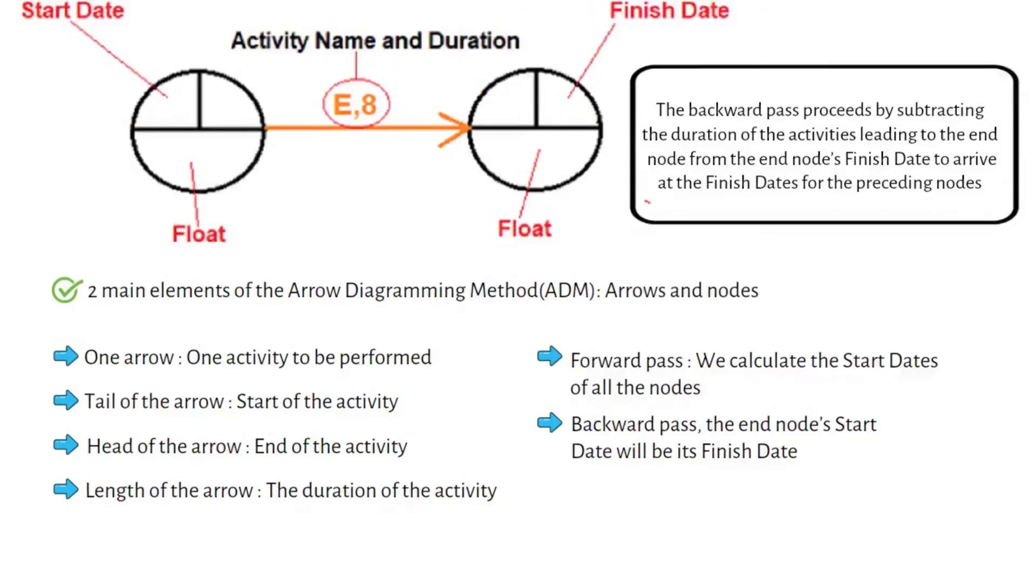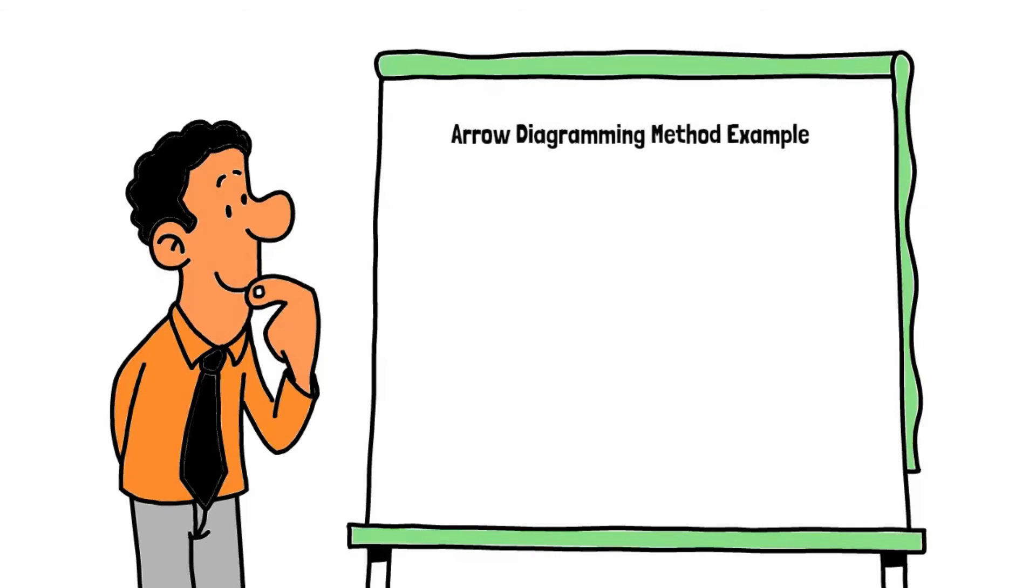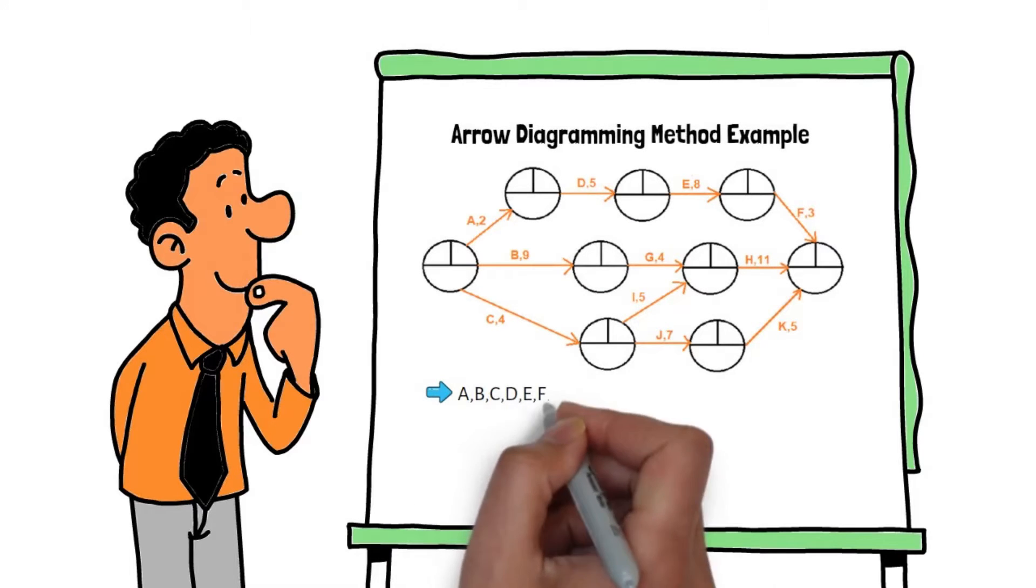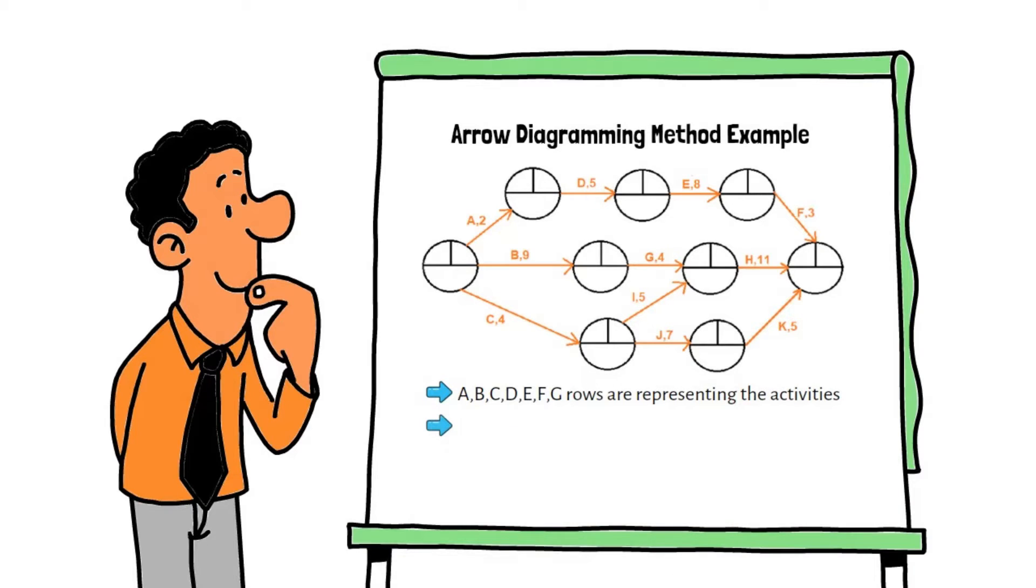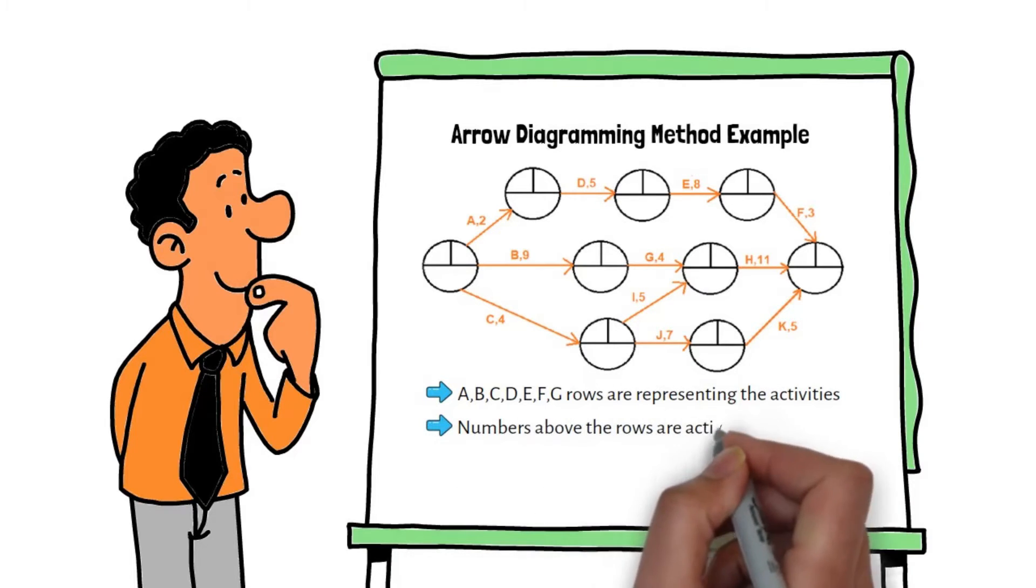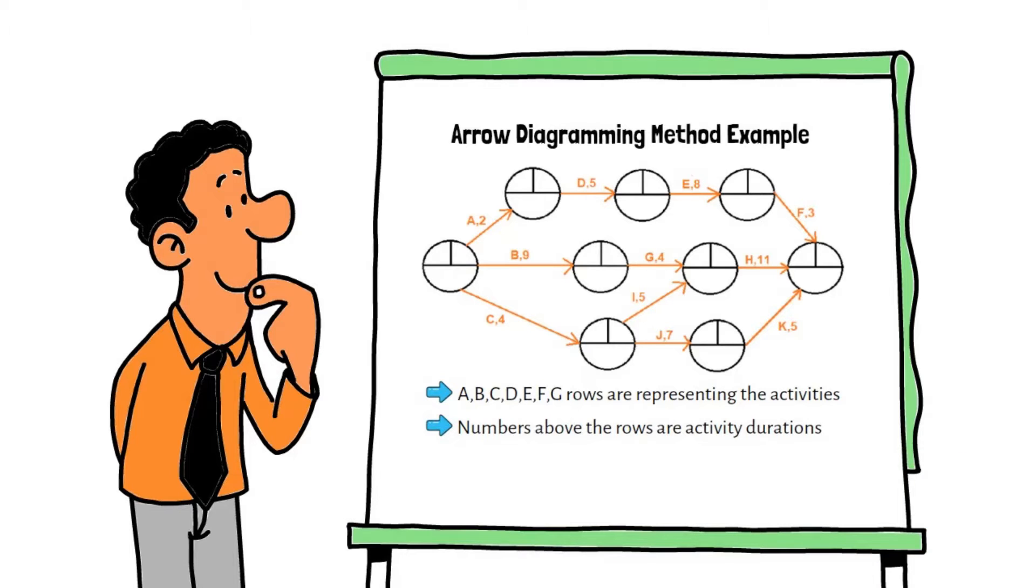Arrow diagramming method example. In this example, A, B, C, D, E, F, G rows are representing the activities. Numbers above the rows are activity durations. As shown in the schema above, in arrow diagramming method only FS relationship is used to link activities.